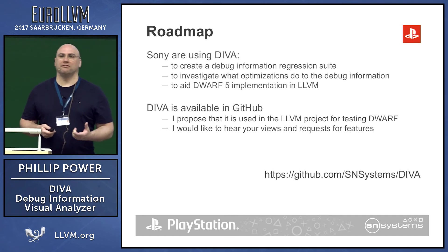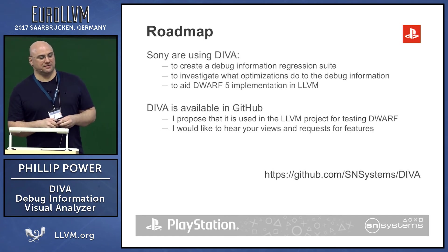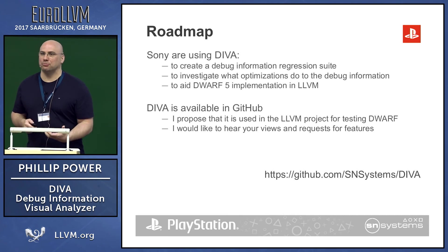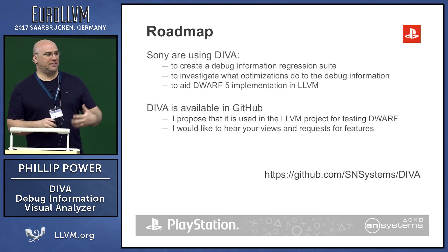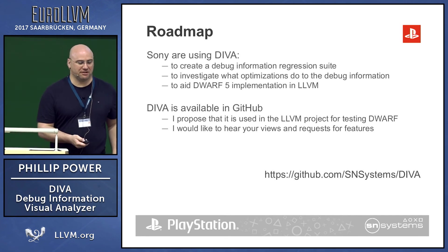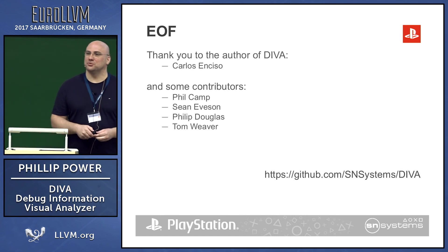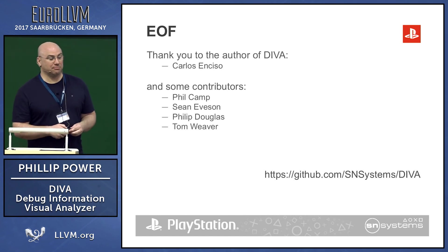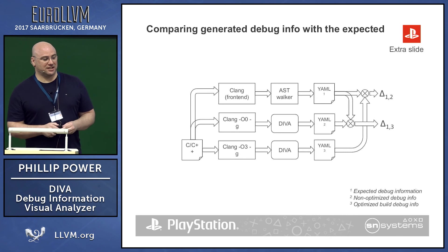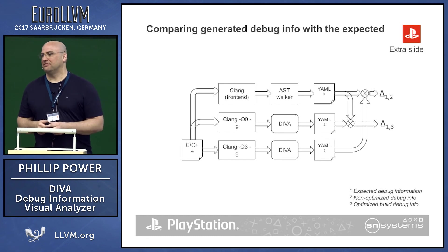One feature currently missing from this version is a YAML output. We feel that will be much more easily scriptable, so features like that are coming very soon. These are some of the contributors within Sony that helped make this happen. I'll just leave with a simple block diagram on how potentially you could use Diva in regression tests and investigations.